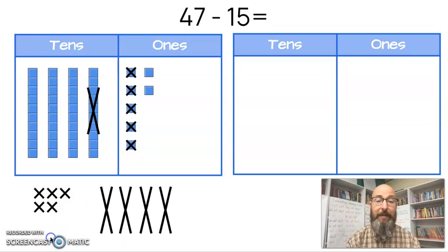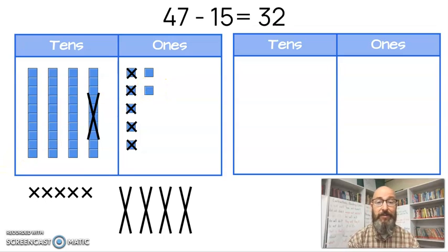Now at this point in time, I can check my base 10 blocks and see what I have left. So these are tens. So let's count by tens. Count with me. 10, 20, 30. And these are ones. So we'll just count by ones here. We already have 30, 31, 32. So the answer is going to be 32.